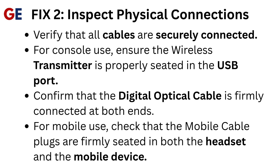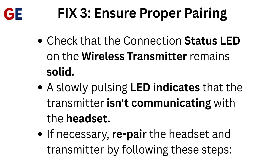For mobile use, check that the mobile cable plugs are firmly seated in both the headset and the mobile device. Fix 3: Ensure proper pairing. Check that the connection status LED on the wireless transmitter remains solid. A slowly pulsing LED indicates that the transmitter isn't communicating with the headset.